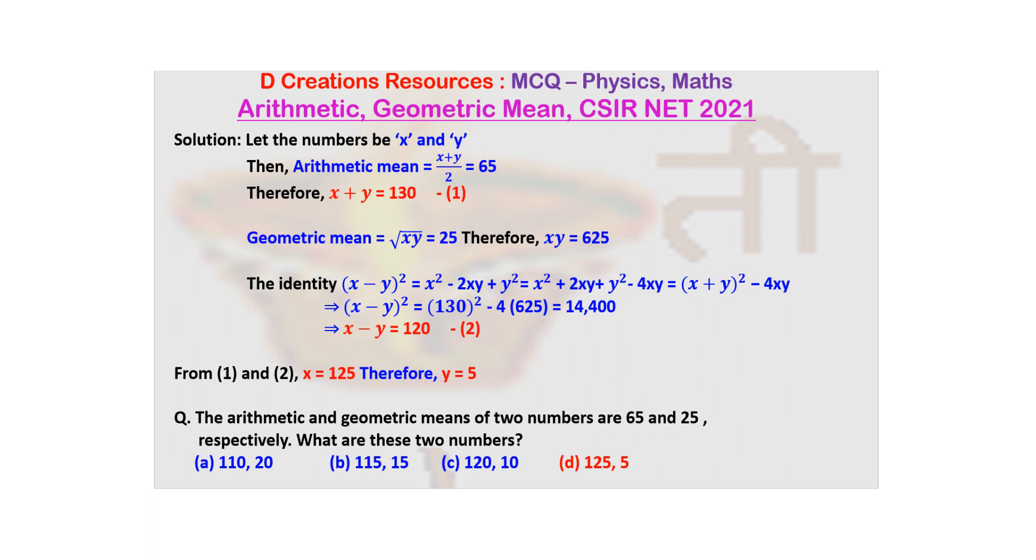Then what is the next information? Geometric mean. How do you calculate geometric mean of two numbers X and Y? It's √(XY). So now we know that √(XY) = 25. That means if you square both sides, XY = 625. So we have the information that X + Y = 130 and XY = 625.